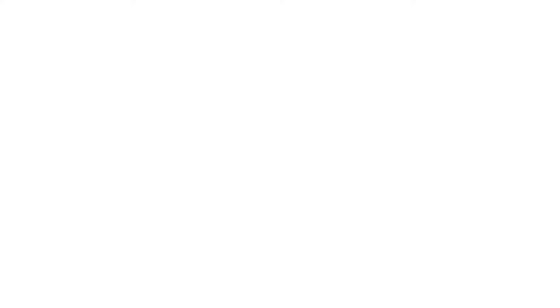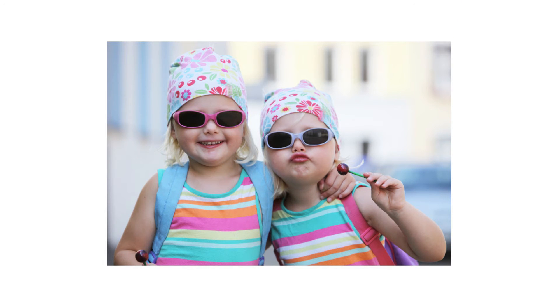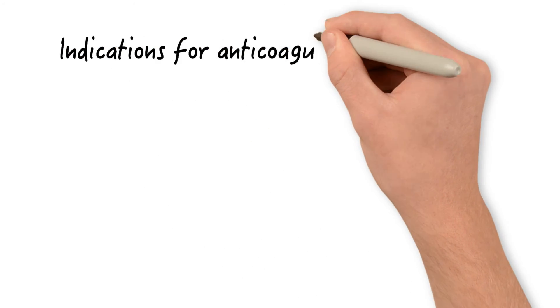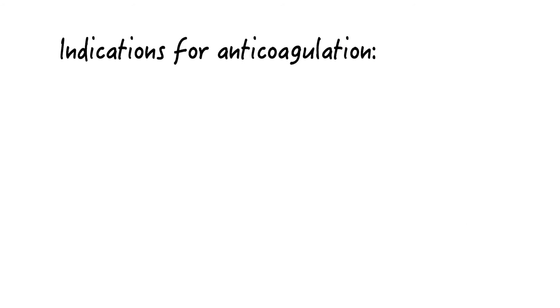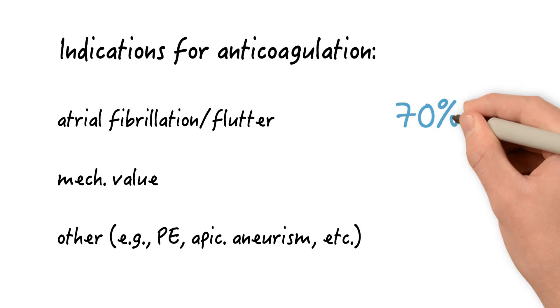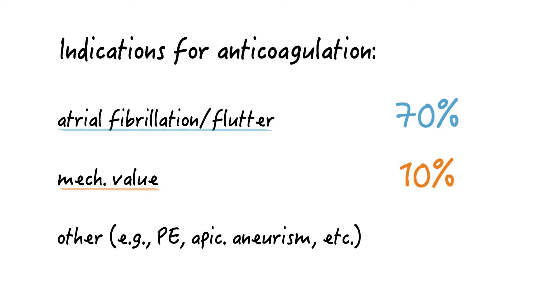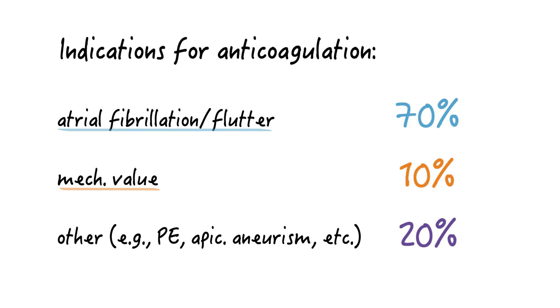The double and triple therapy groups were similar at baseline with respect to various variables like age, gender, comorbidities, and drug therapy. Indications for anticoagulation in the study's patients were as follows. 70% had atrial fibrillation or atrial flutter. 10% had mechanical valves and 20% received it for other reasons like pulmonary embolism, apical aneurysms, etc.